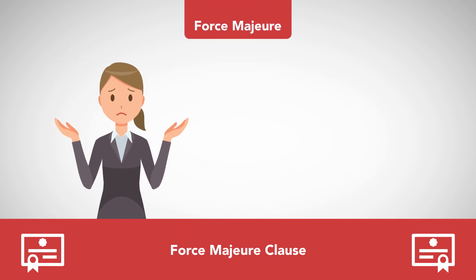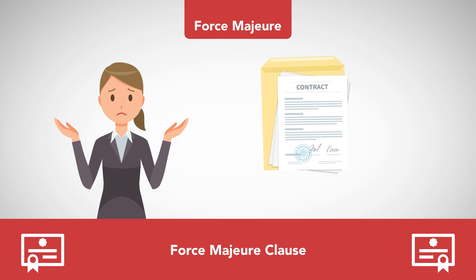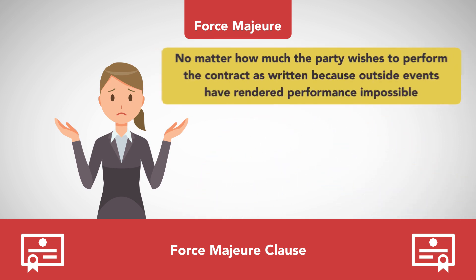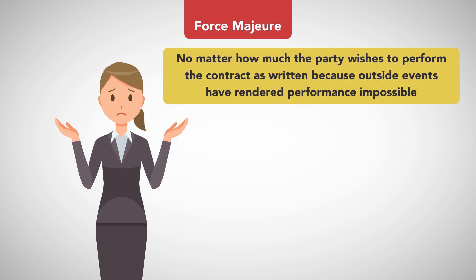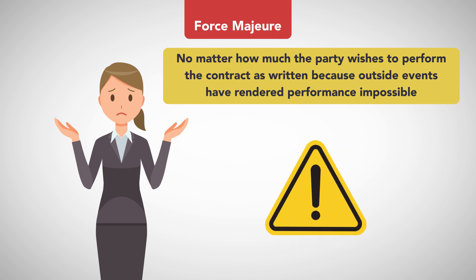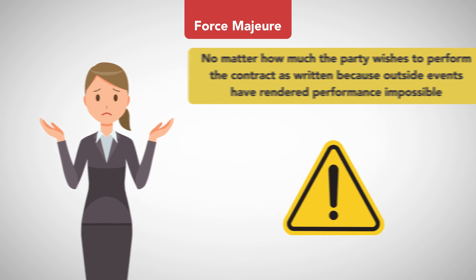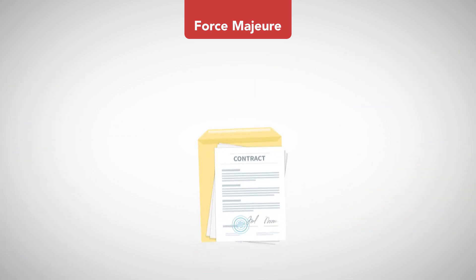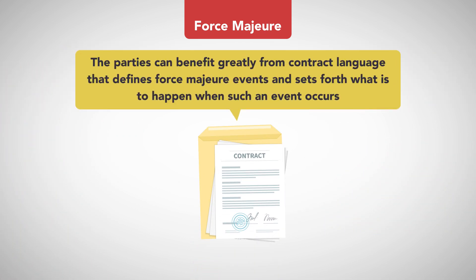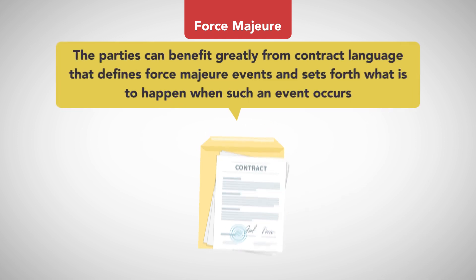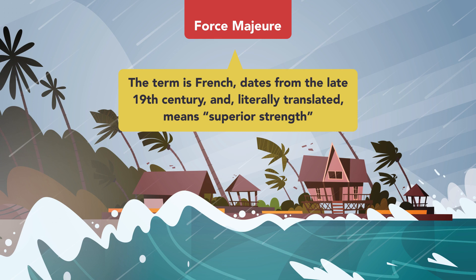Force Majeure. Sometimes a party's performance of a contract is not within its control, no matter how much the party wishes to perform the contract as written, because outside events have rendered performance impossible. When that happens, and to avoid the resulting breach of contract, the parties can benefit greatly from contract language that defines force majeure events and sets forth what is to happen when such an event occurs. The term force majeure is French, dates from the late 19th century, and, literally translated, means superior strength.